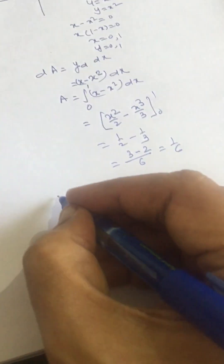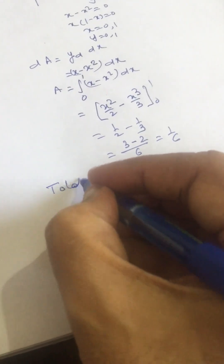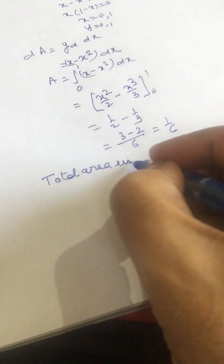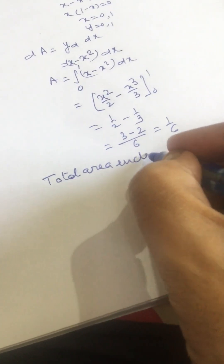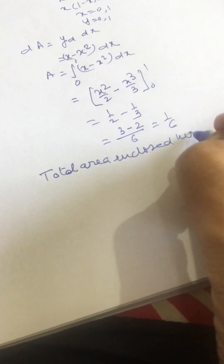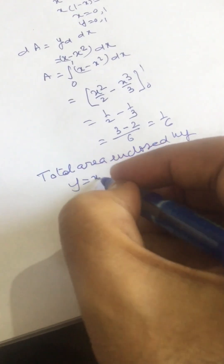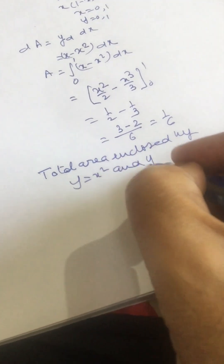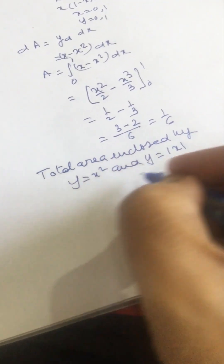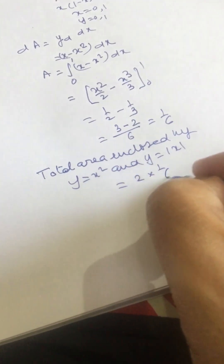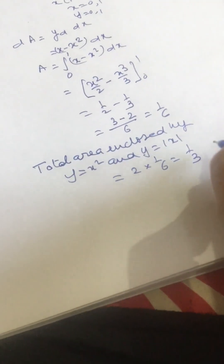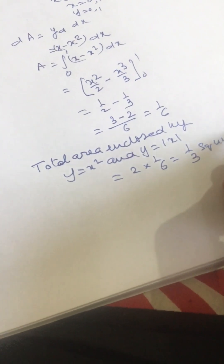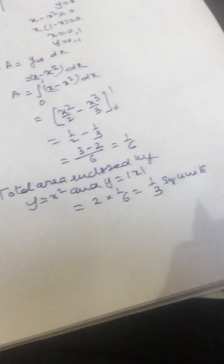So the total area between y equals x squared and y equals absolute value of x will be 2 times 1 over 6, which is 1 over 3 square units.